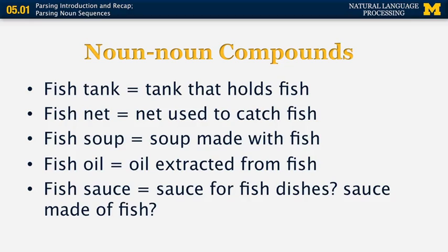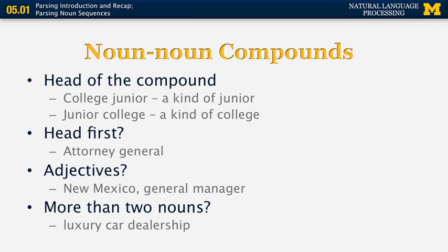Some of those can even be ambiguous — 'fish sauce' could be either a sauce for fish dishes or a sauce made of fish. In English, when we have a noun-noun compound, most of the time the head of the compound is the second word. For example, 'college junior' is a kind of junior, while 'junior college' is a kind of college. However, there are exceptions — 'attorney general' is a kind of attorney, not a kind of general, though such head-first constructions are relatively rare in English.